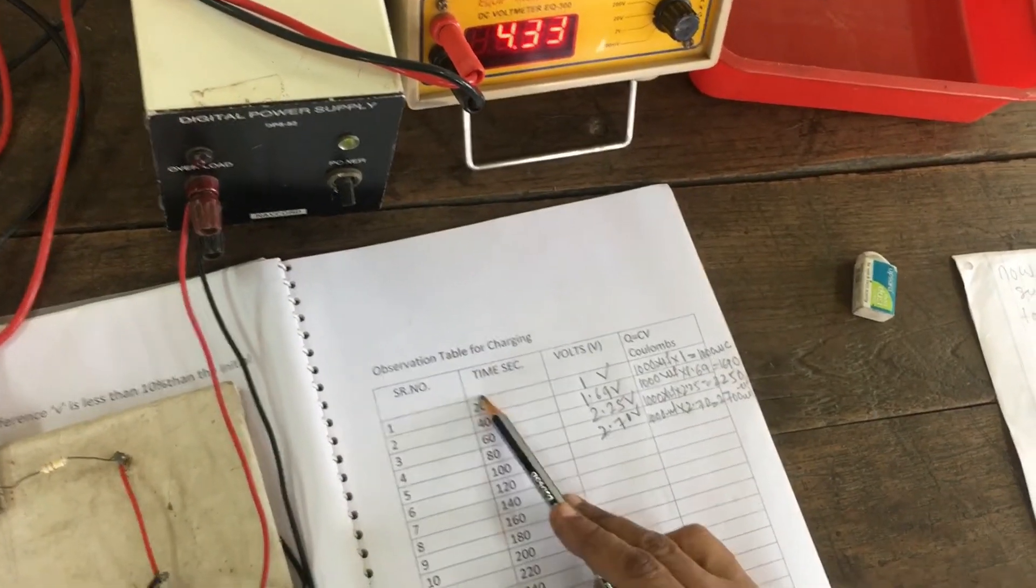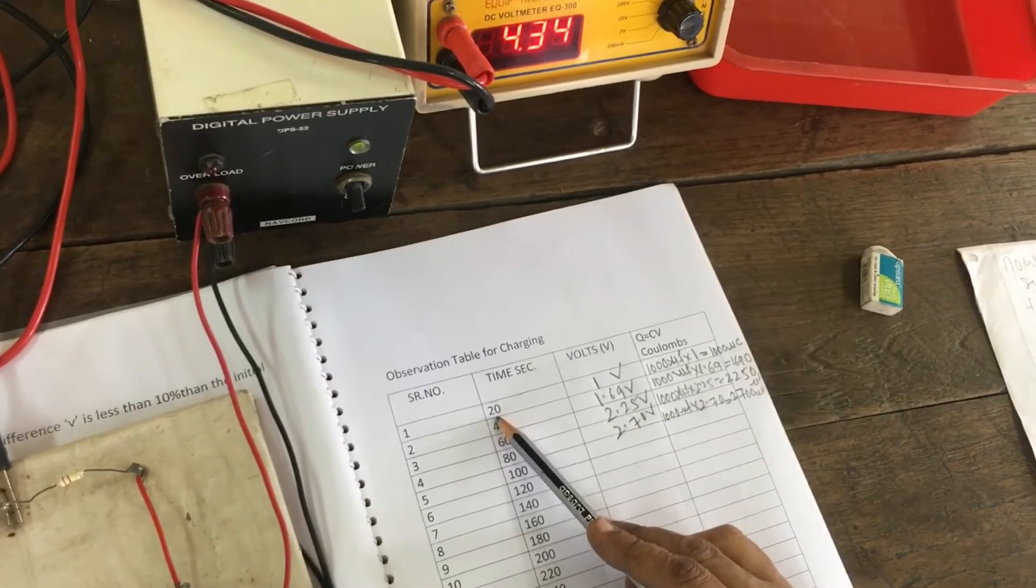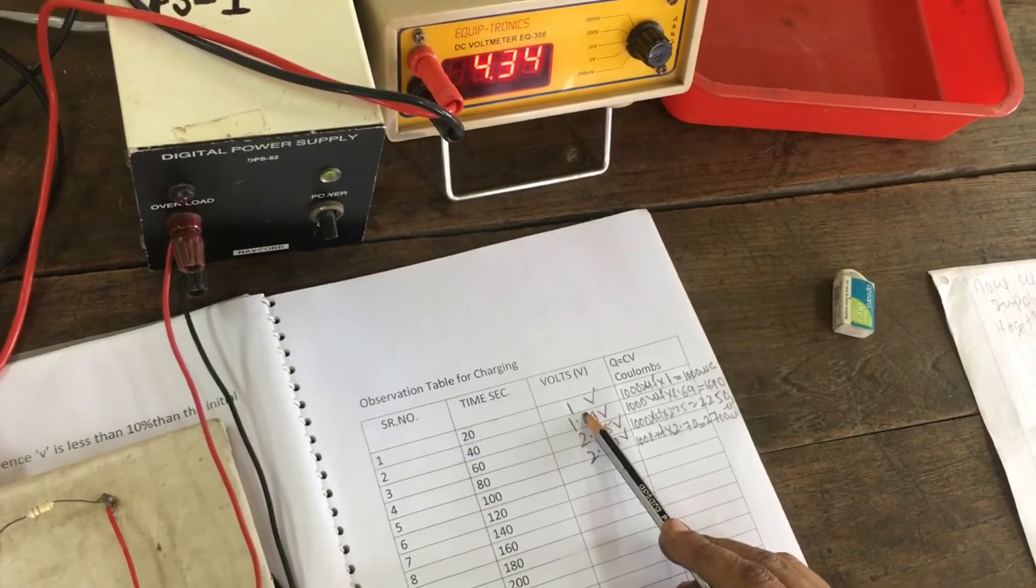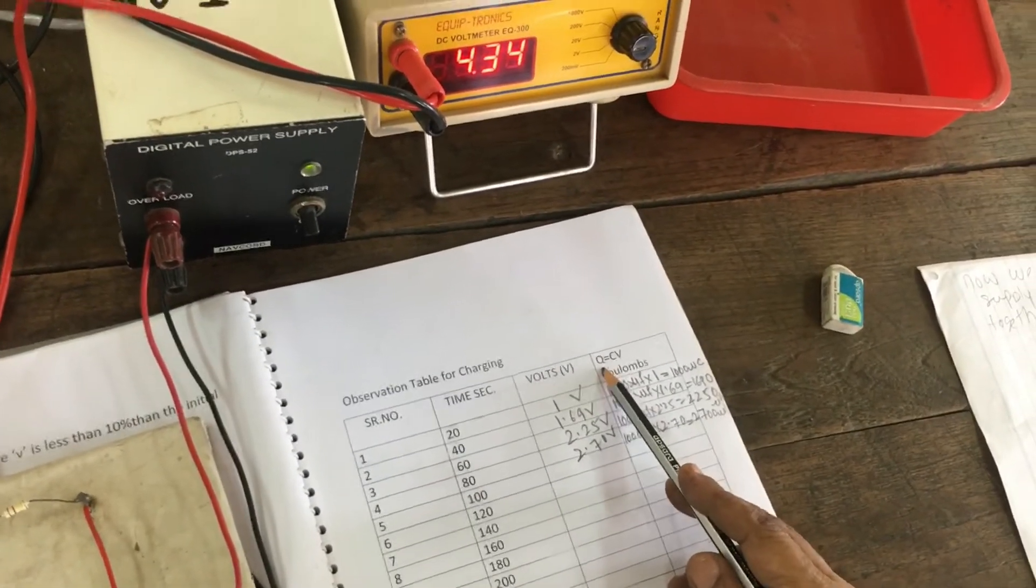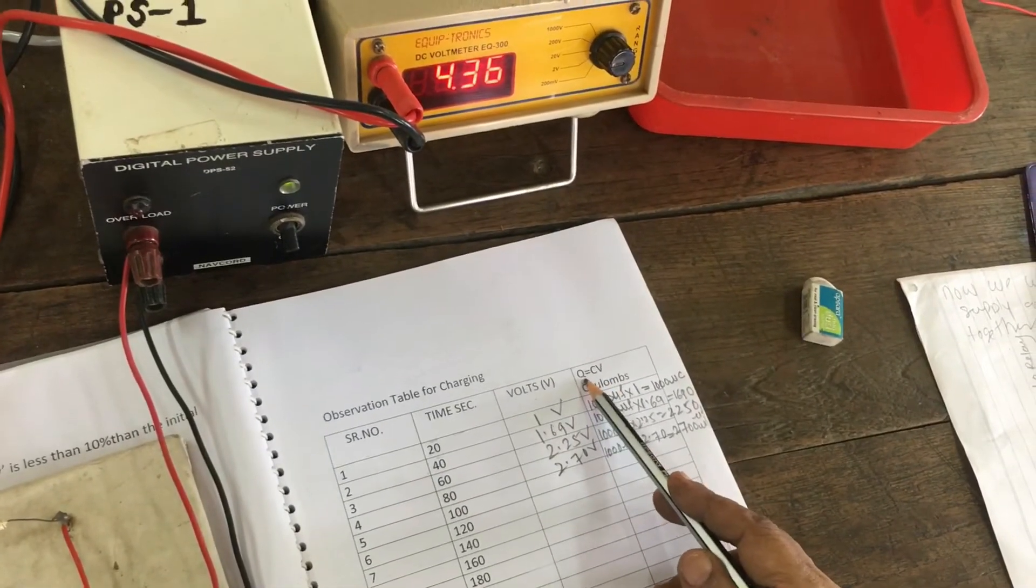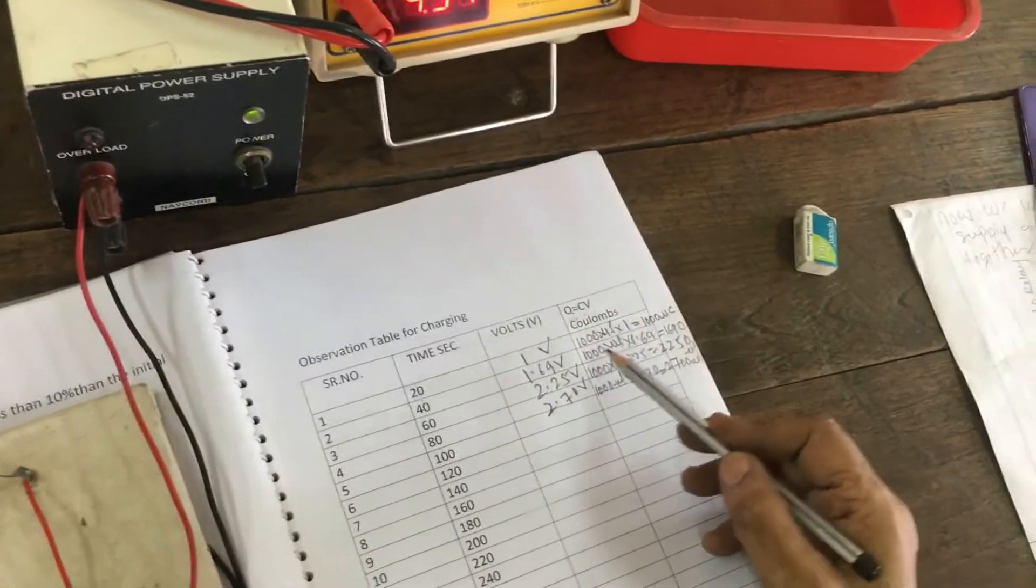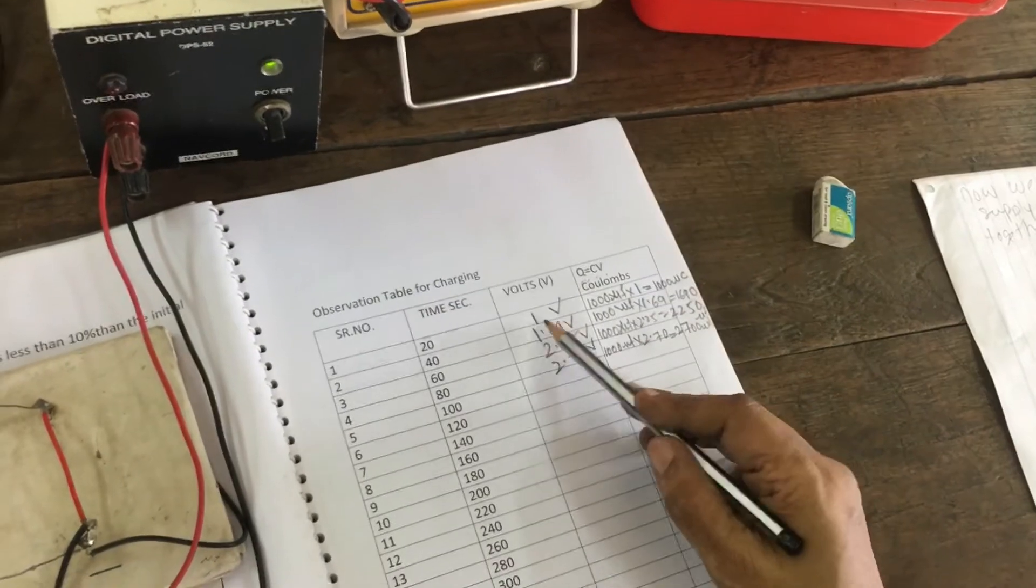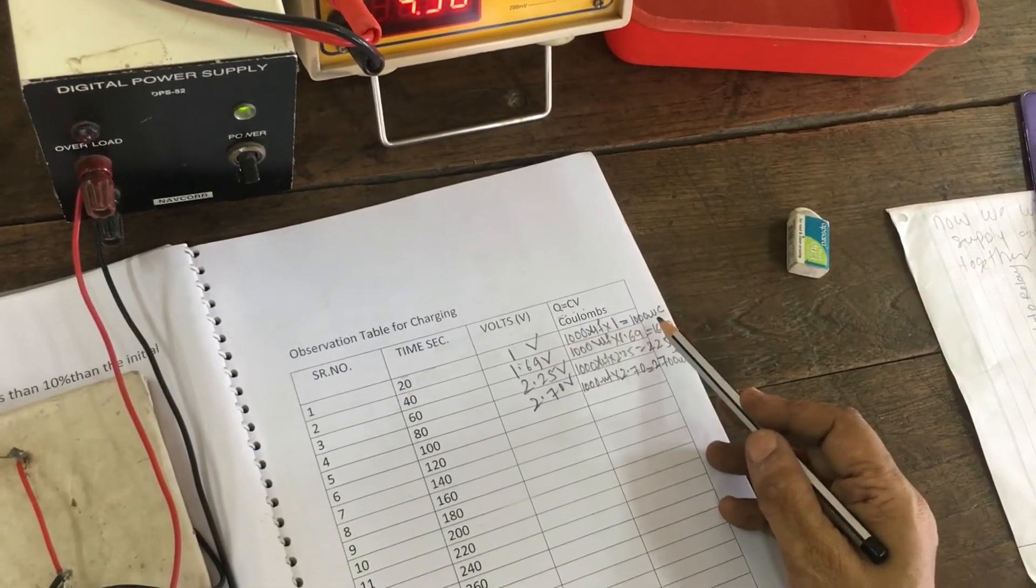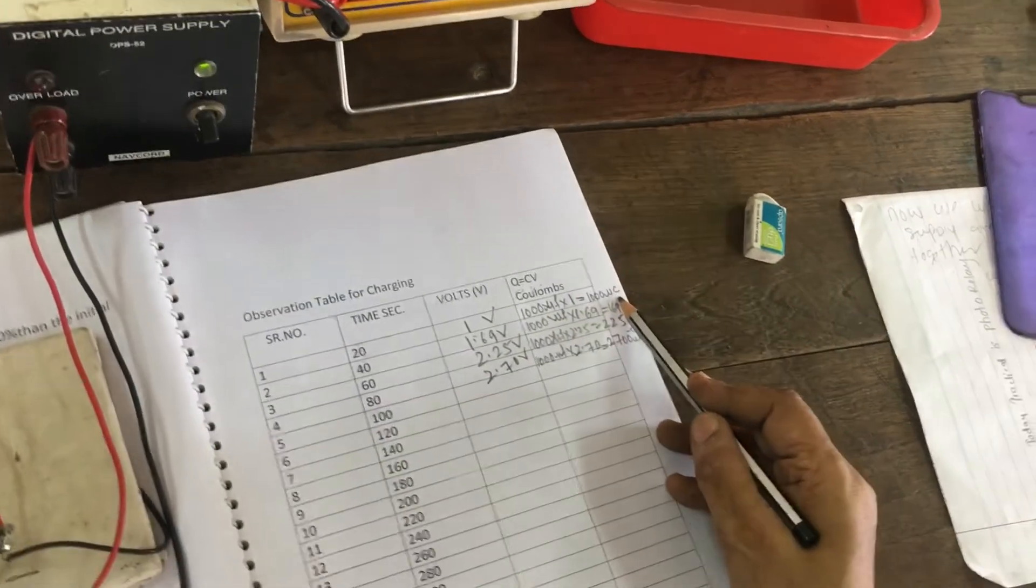Now, we are measuring at 20 seconds. The voltage may be 1 volt. And we have to calculate Q. This is the column. Q is equal to charge. Now, here C is 1000, C means capacitor. V means voltage. 1000 multiplied by 1 volt, it may be 1000 microcolumns.